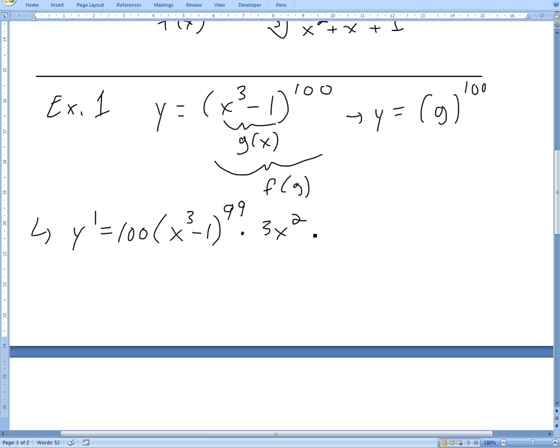So this is our answer. We can simplify it further. Multiply 3 by 100, we'll get 300 x squared and then x cubed minus 1 to the power of 99 right here. So that is our answer. It's pretty straightforward using the chain rule.